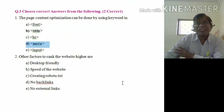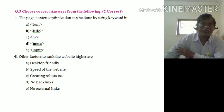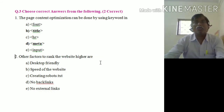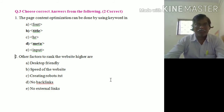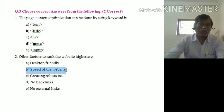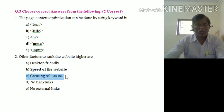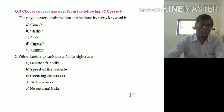Second question: other factors to rank the website higher are — options include desktop friendly, speed of the website, creating robots.txt, no backlinks, no external links. The answers are speed of the website and creating robots.txt.